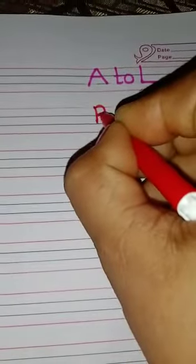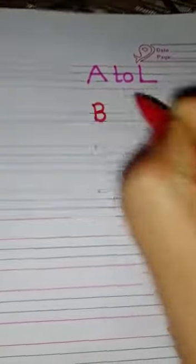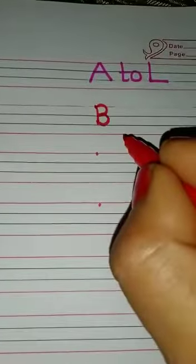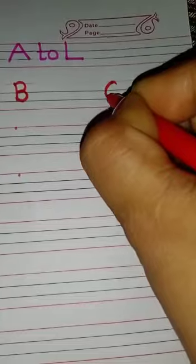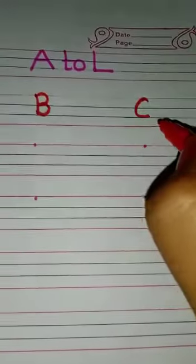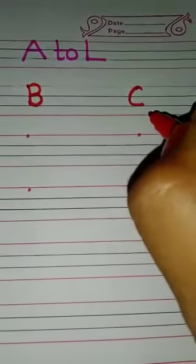Standing line, join small curve — capital alphabet B. B for ball. Small curve — capital alphabet C. C for cat.